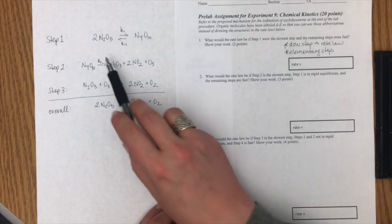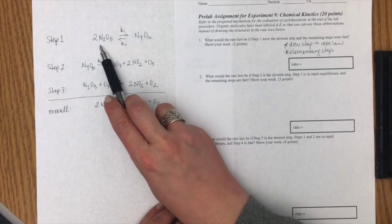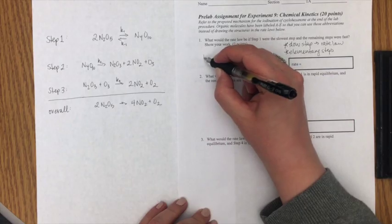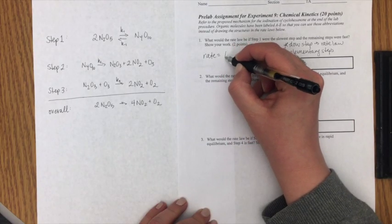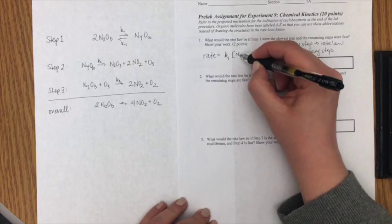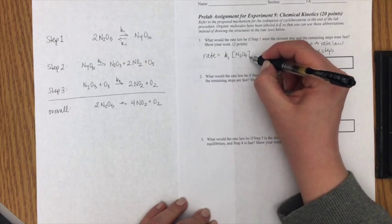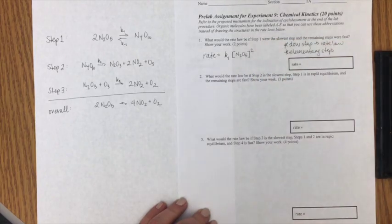And to start off if step one is the reaction that's the slowest then I say my rate equals K1 times the concentration of N2O5 that reactant raised to its stoichiometric coefficient for the order of that reaction. And that's all because step one is the slowest step.